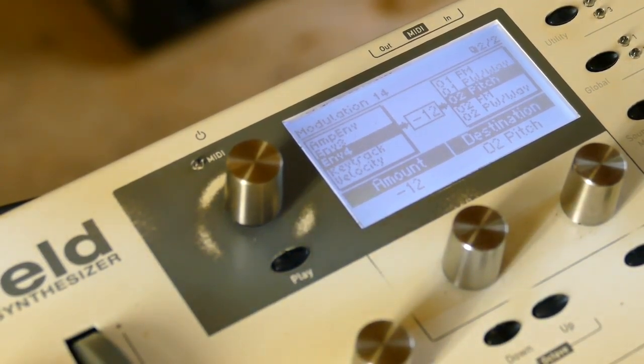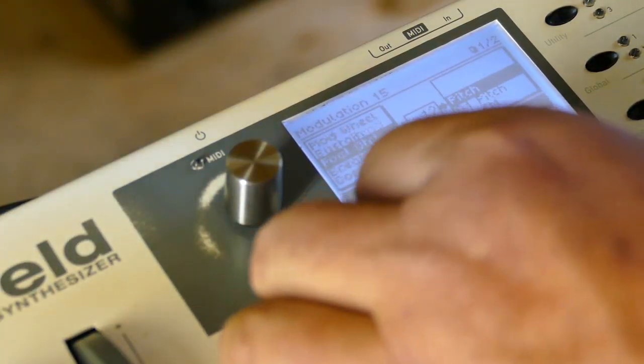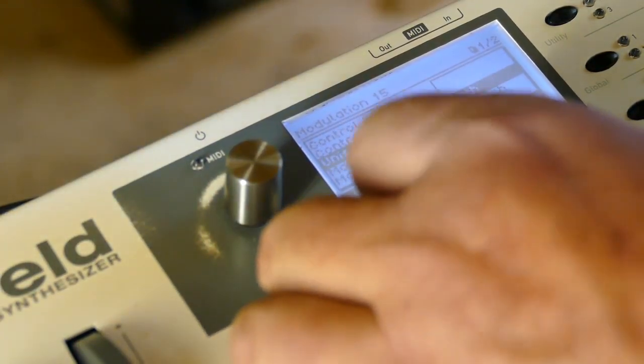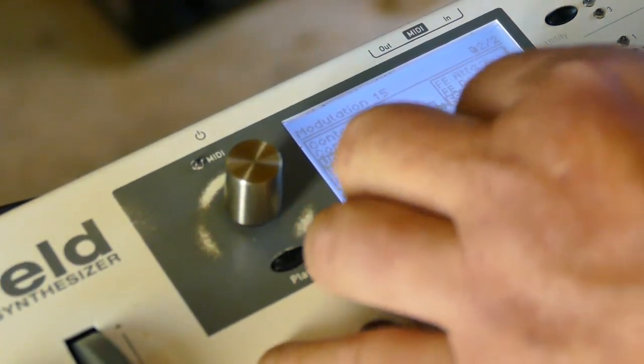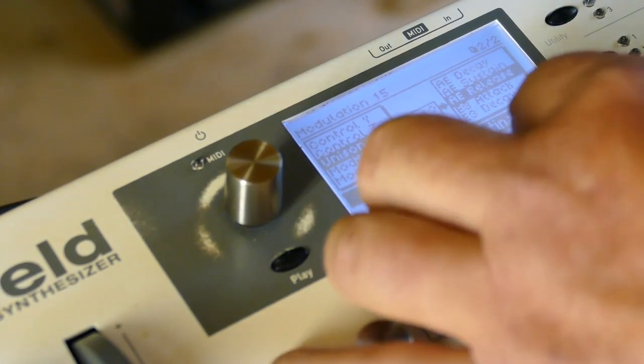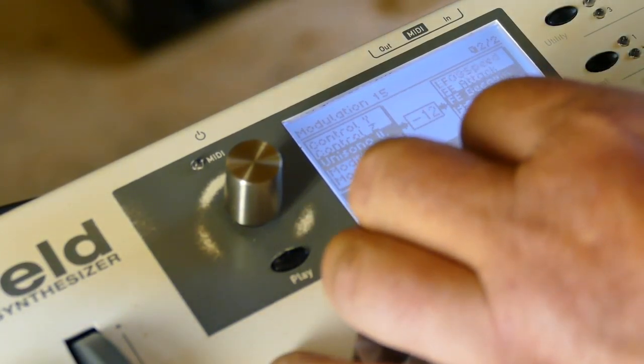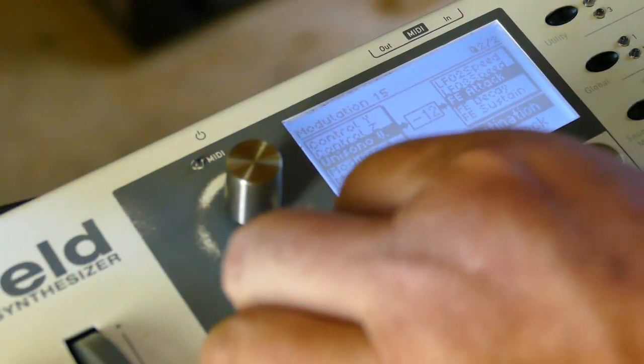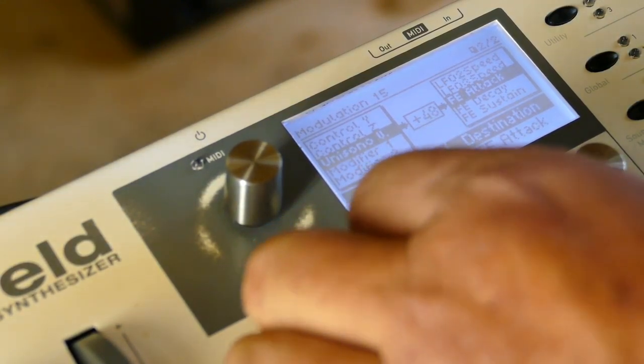Let's stereo-ify it some more. Let's say unison controls filter 1 attack. Now the right channel is coming in before the left channel.